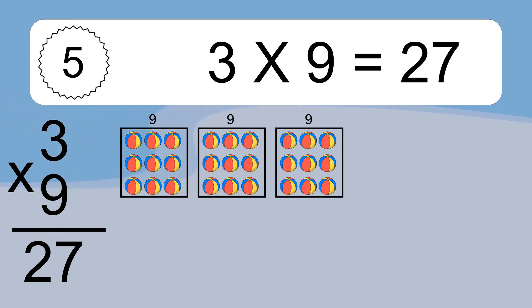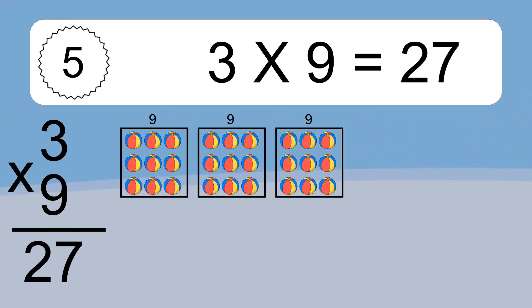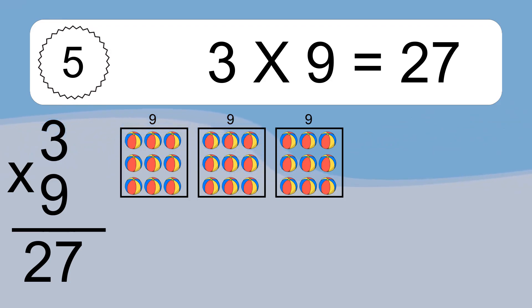We have 3 boxes, and each box has 9 colorful balls inside. If you count all the balls in all the boxes together, you will have 3 times 9 balls. This equals 27 balls.